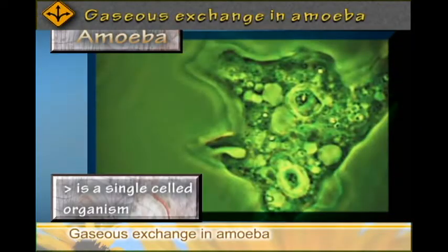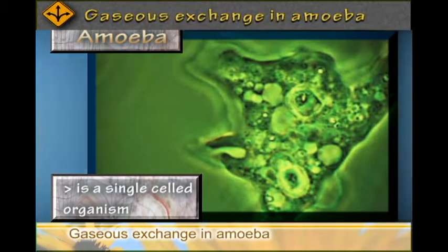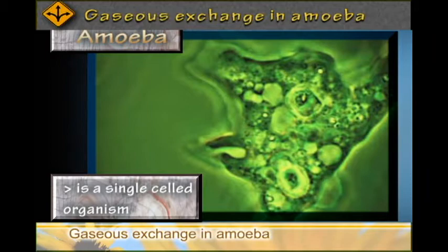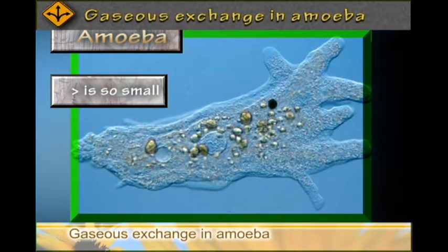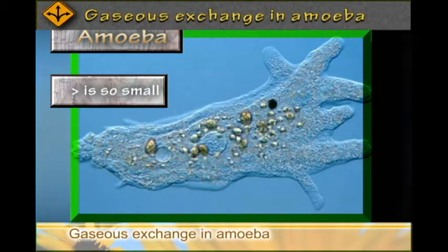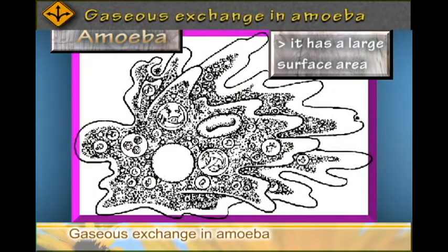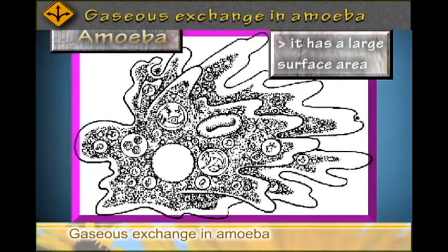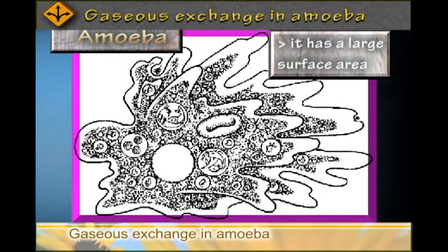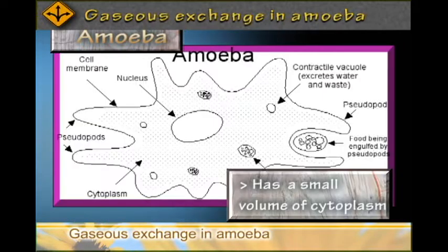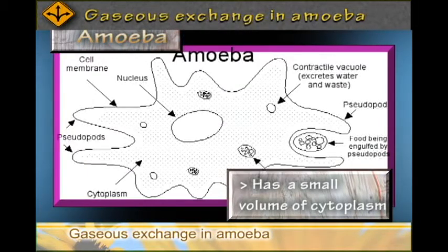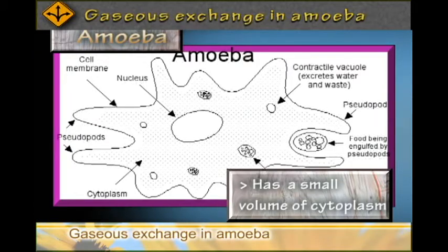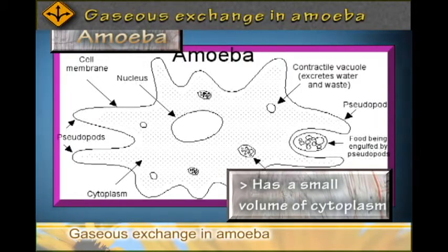Amoeba is a single-celled organism. It has one cell and it is so small, but has a large cell membrane surface area and a small volume of the cytoplasm. Therefore, this increases the surface area over which gaseous exchange can take place.